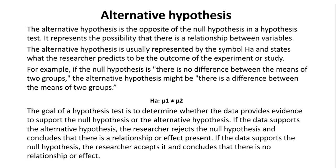If the data supports the alternative hypothesis, the researcher rejects the null hypothesis and concludes that there is a relationship or effect present. If the data supports the null hypothesis, the researcher accepts it and concludes that there is no relationship or effect.